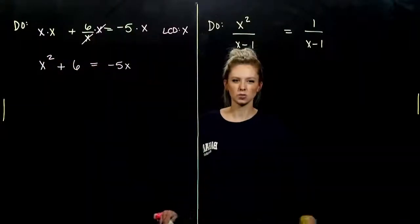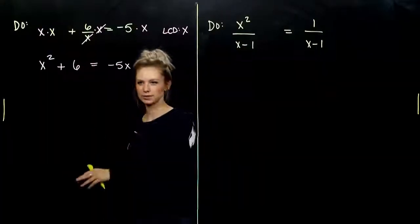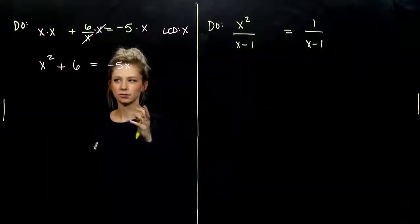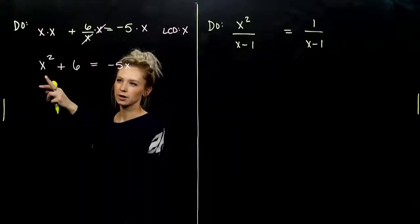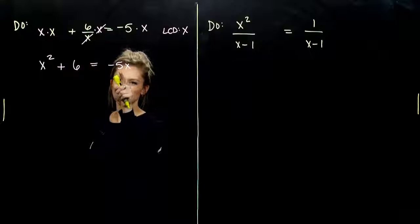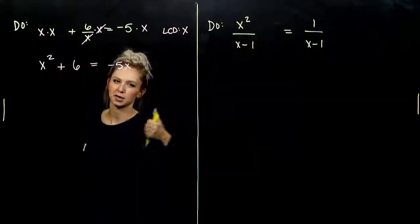So, in order to solve quadratics, what do we need? Everything on one side having it set equal to zero. And we need our squared term to be positive. It already is.